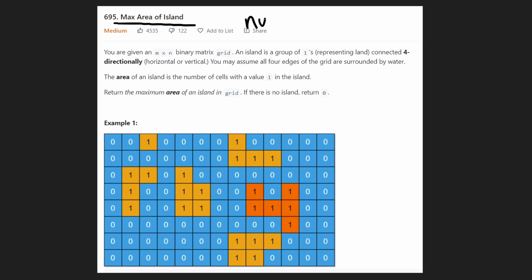This is actually very similar to another problem that we have solved called number of islands. It's pretty much the same general algorithm but we're returning a slightly different result. Rather than counting the number of islands, we're actually going through every island and figuring out which one of them has the max area and then we're going to return the max area of any of these islands.